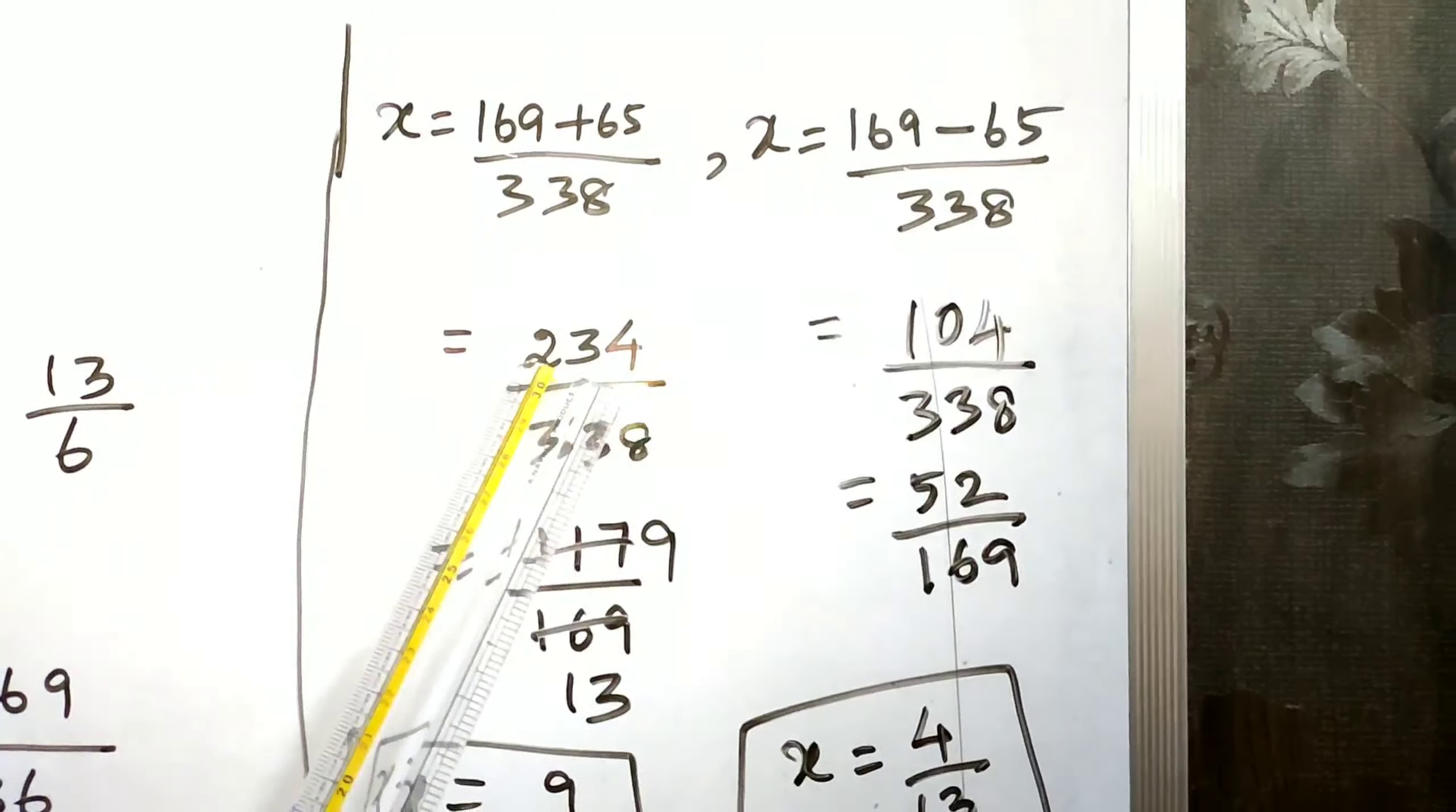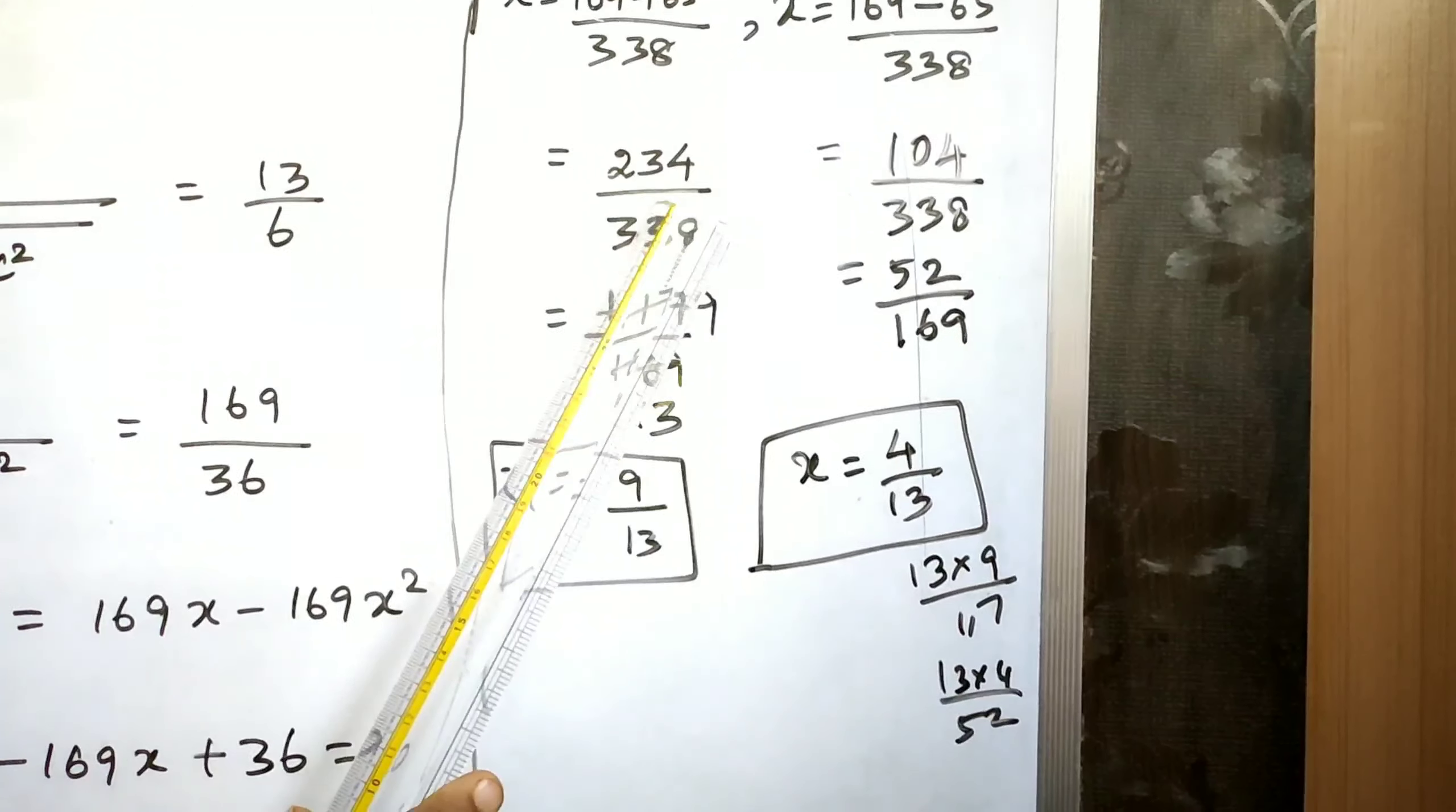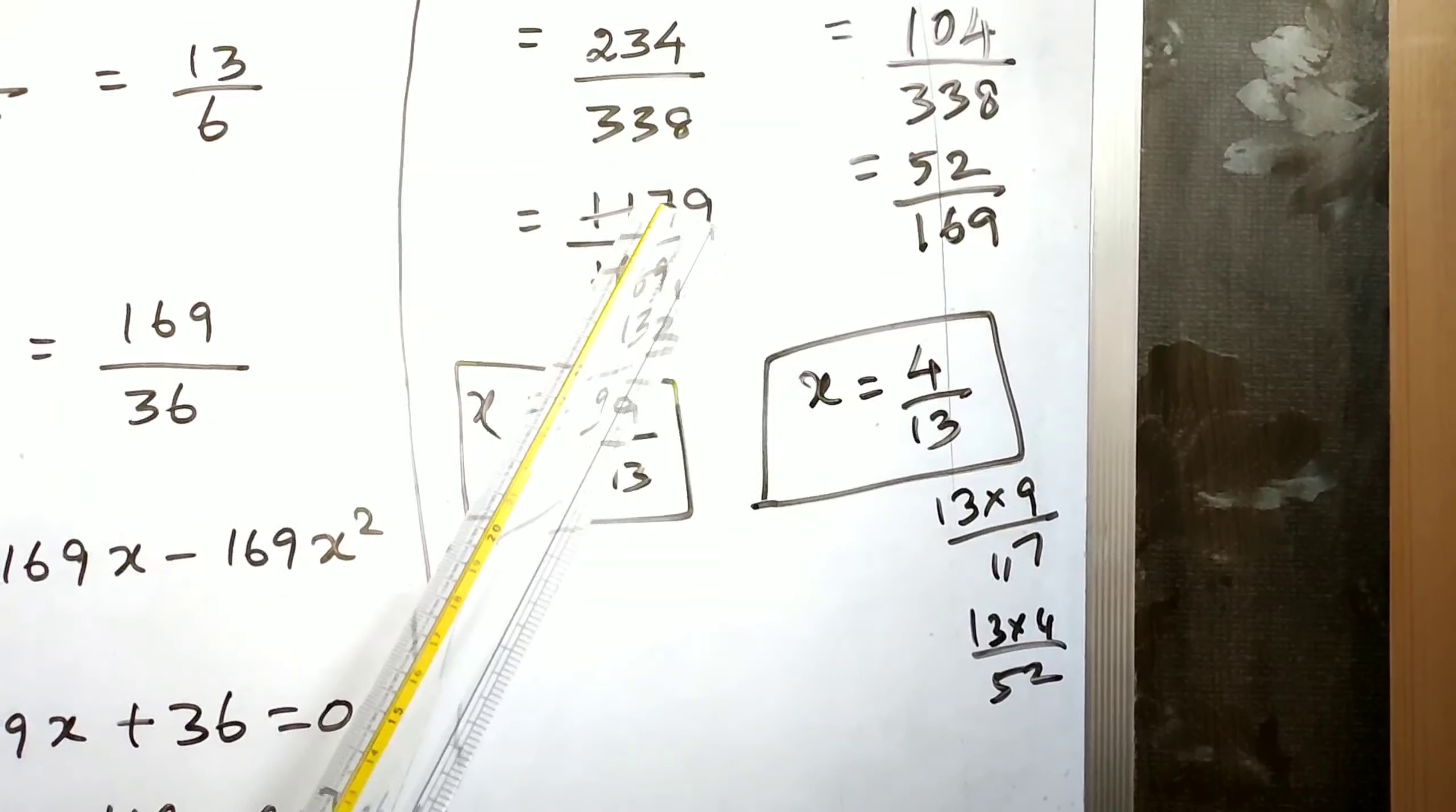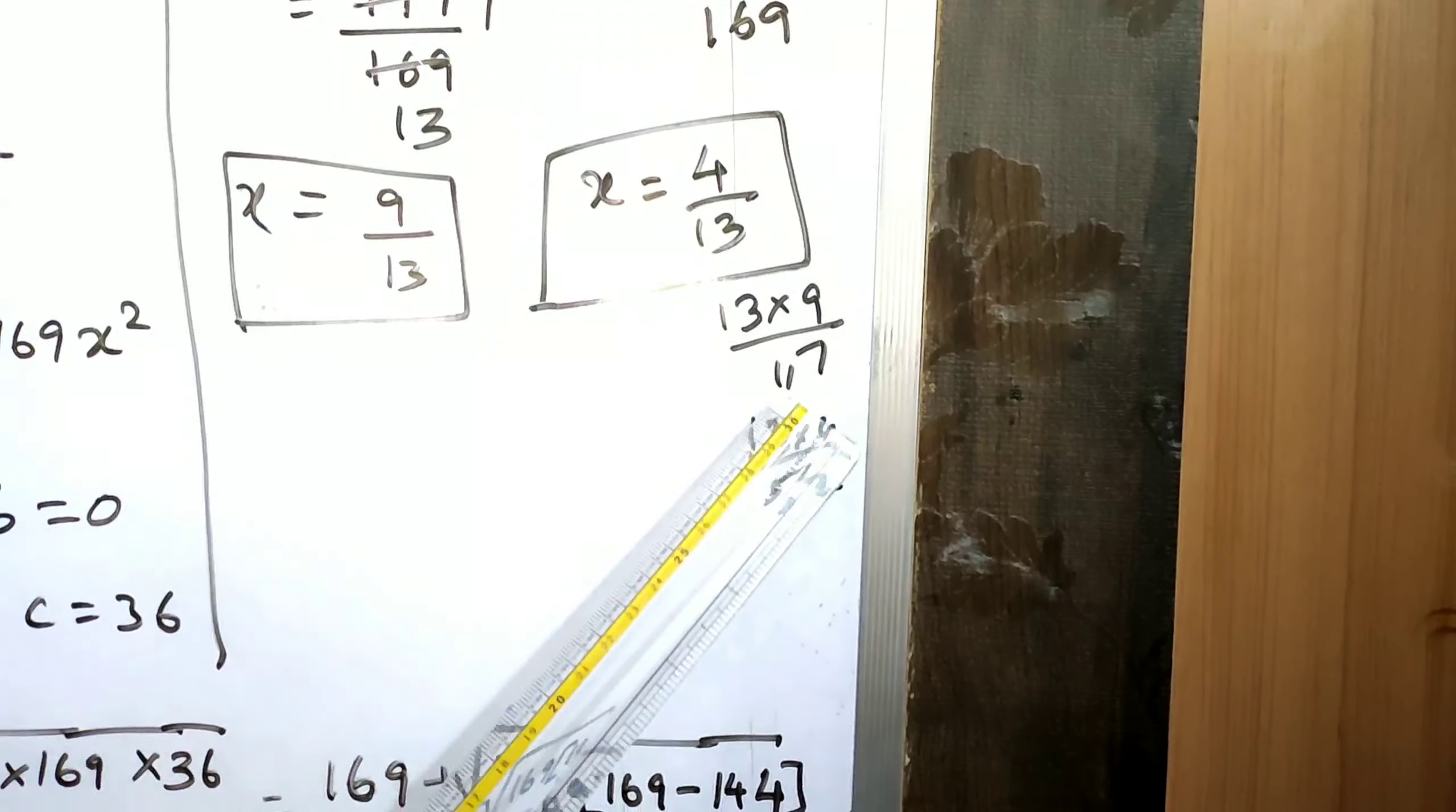If you add these two: 234 by 338. Cut with the 2nd table: 1 2s are 2, 1 2s are 2, 1 2s are 2 remainder 1, 7 2s are 14 by 1 2s are 2 remainder 1, 6 2s are 12 remainder 1, 9 2s are 18. These cut with 13th table: 13 times 9 is 27.